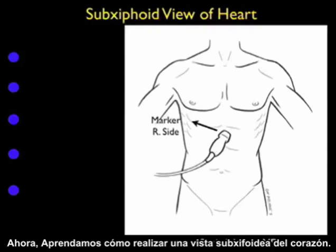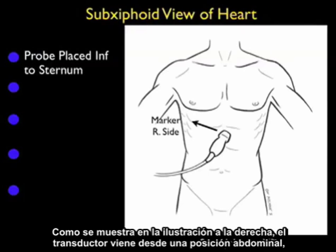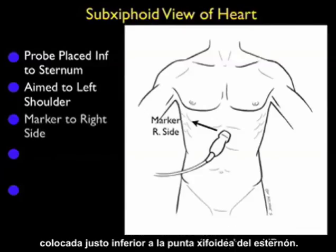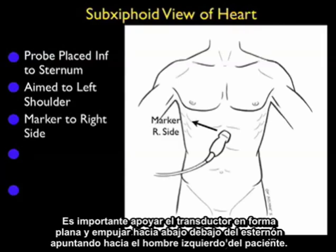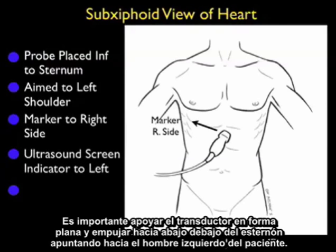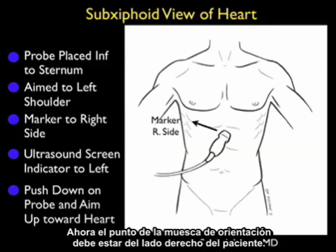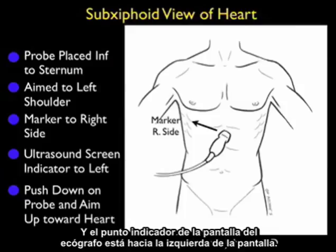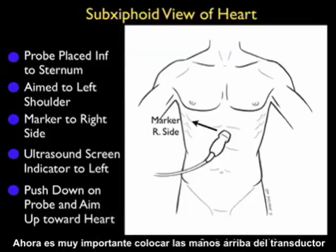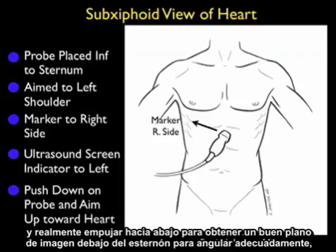Now let's learn how to perform the subxiphoid view of the heart. As shown in the pictorial, the probe is coming from an abdominal position placed just inferior to the xiphoid tip of the sternum. It's important to lay the probe flat and push down and under the sternum, aiming towards the patient's left shoulder. The marker dot on the probe should be over towards the patient's right side, with the ultrasound screen indicator dot towards the left of the screen. Put your hands on top of the probe and really push down and up to get the good imaging plane underneath the sternum and make the angle to get a good view of the heart from this plane.